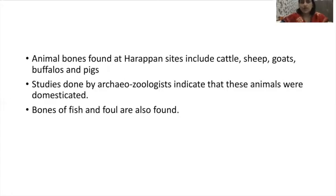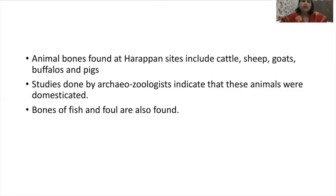Animal bones found at Harappan sites include cattle, sheep, goats, buffaloes and pigs. Studies done by zoologists indicate that these animals were domesticated. Bones of fish and fowl are also found. Bones of wild animals have also been found, but historians have not been able to determine whether they were eaten or not.